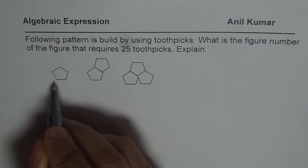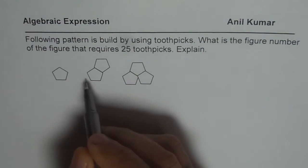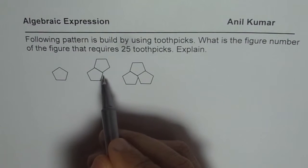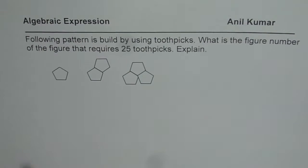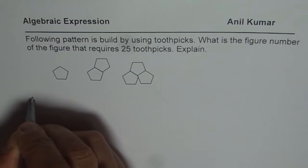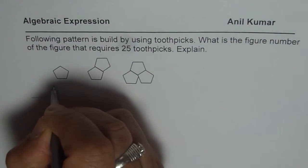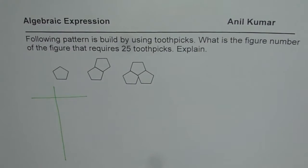So what we have is these pentagons and the pattern is increasing by attaching a pentagon to the previous one with one side overlapping. Now to find the number of toothpicks, we can actually make a table and then see the pattern. So that is the whole idea.